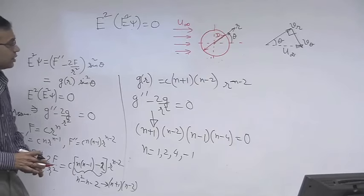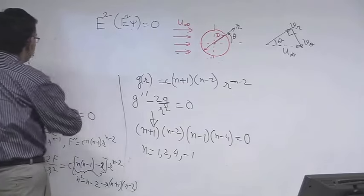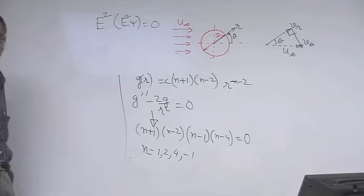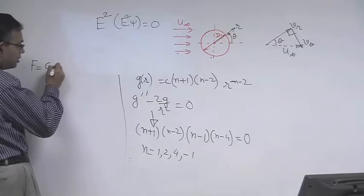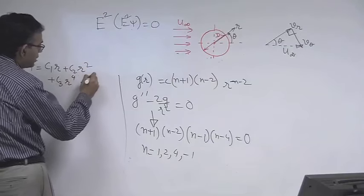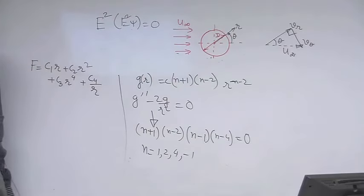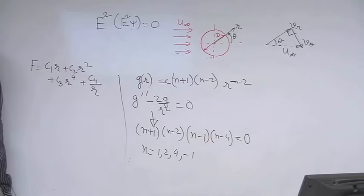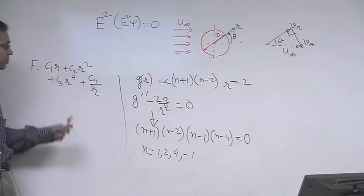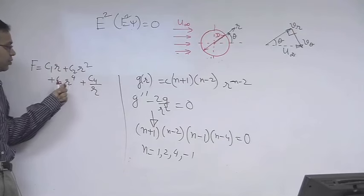We get four roots: n = 1, 2, 4, −1. Therefore, the general solution is f(r) = C₁r + C₂r² + C₃r⁴ + C₄/r. Each root corresponds to one constant, and to determine the stream function we require four boundary conditions to find C₁, C₂, C₃, C₄.